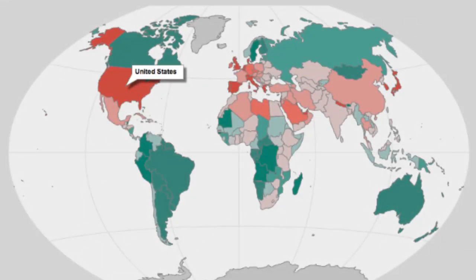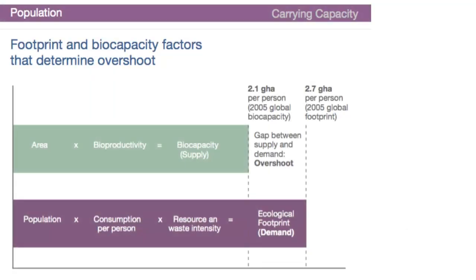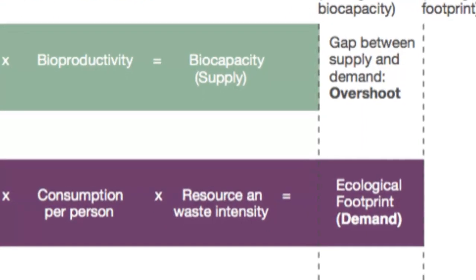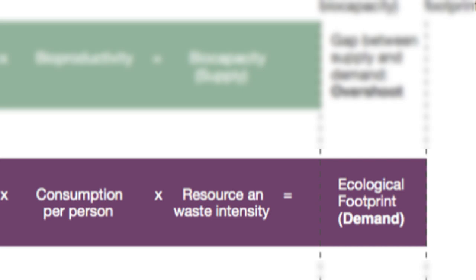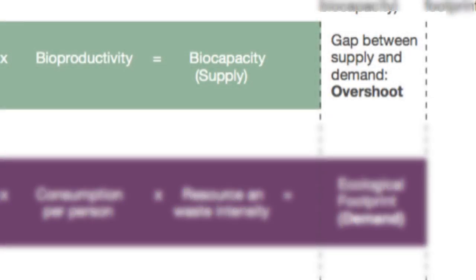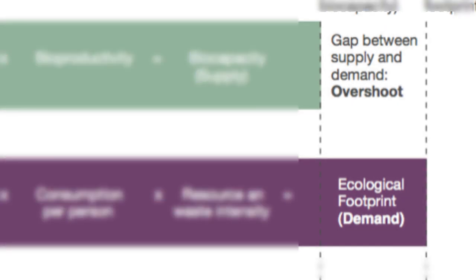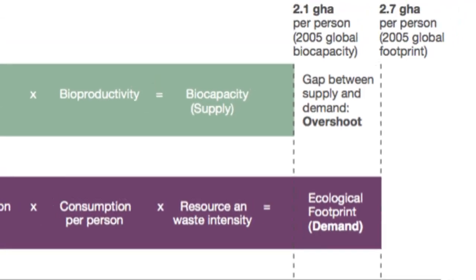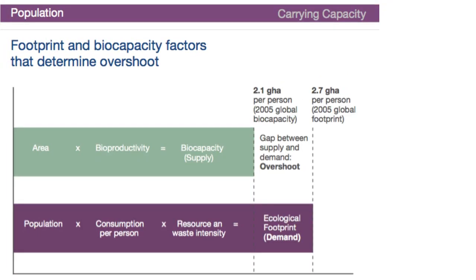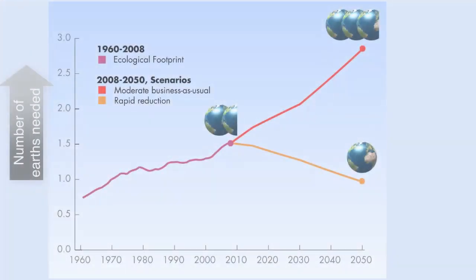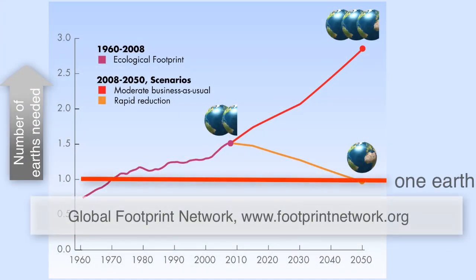When all nations are taken together we get a sense of the global picture. Based on data from 2005, the global ecological footprint exceeds the global biocapacity — there is a gap between what the earth is able to produce and what is needed to supply our consumption and process our wastes. This gap is called overshoot. Every year since the 1980s we have needed more than one earth's supply of bioproductive land to meet demand.